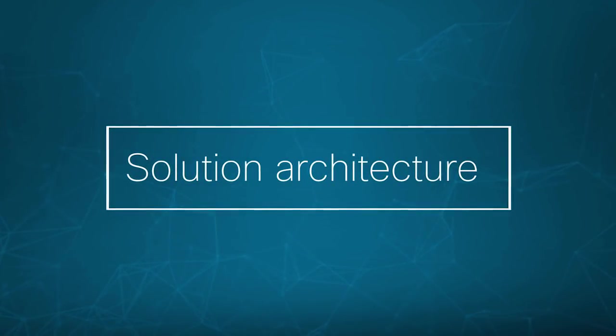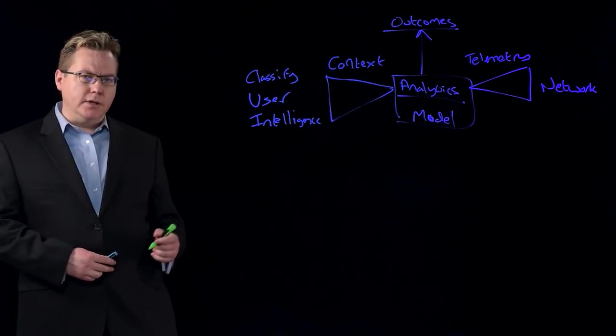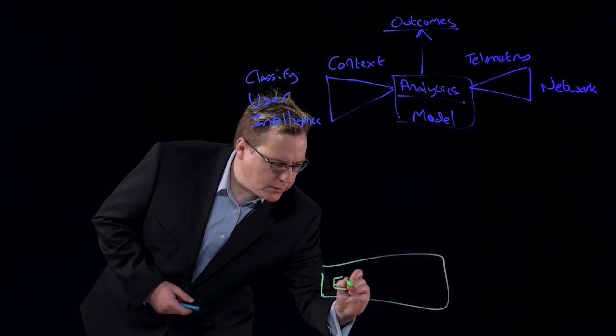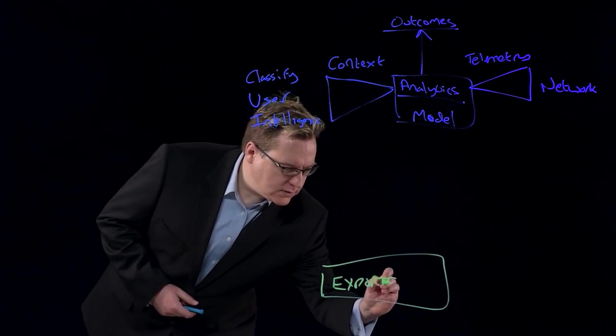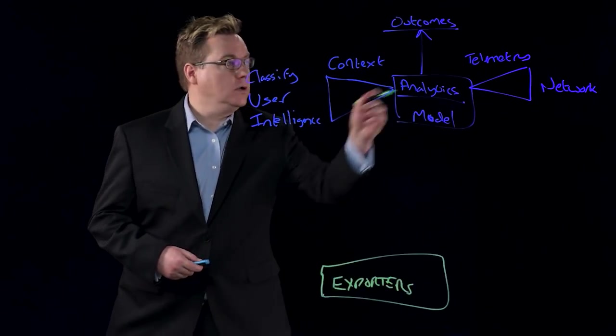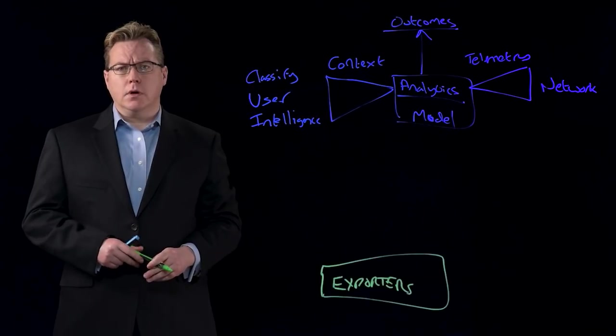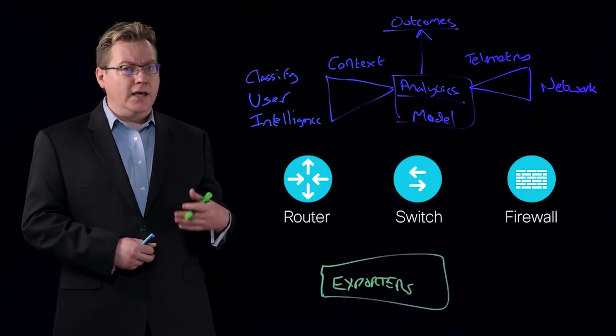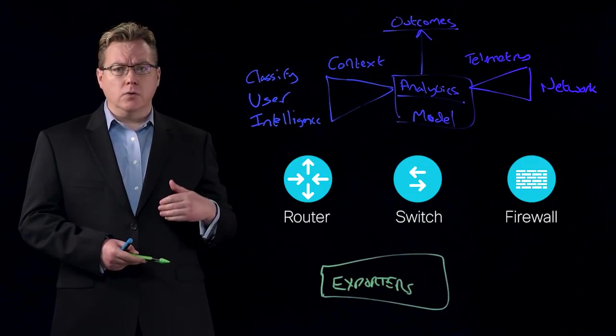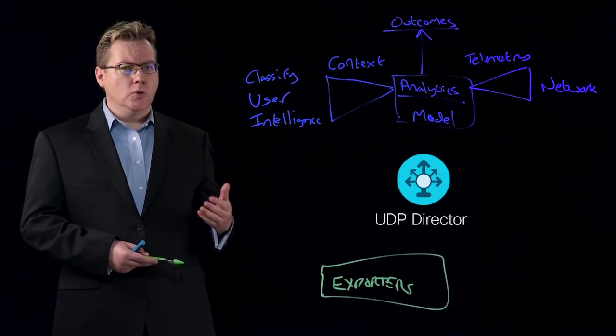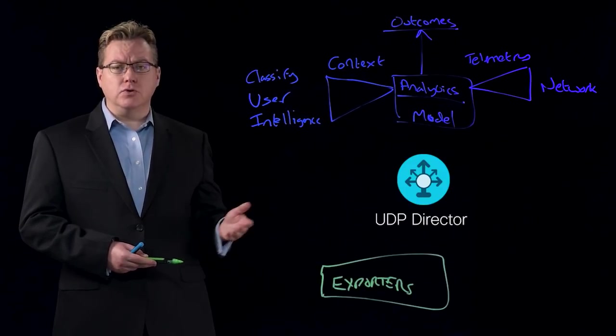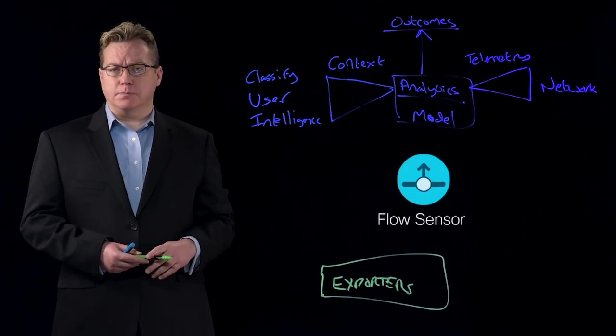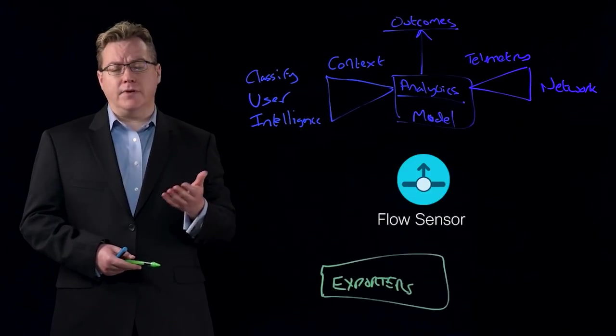So let's talk about the architecture of Stealthwatch Enterprise. Simply, it's three main components. The first is what we call the exporters. This is our way of getting this transactional telemetry into our data model. Now this can take the form of NetFlow or IPFIX coming from the network. It can take the form of using some of our products, the UDP director, which is our way of forwarding on UDP streams or replicating them. It can take the form of the flow sensor, which is our device to be attached to a span port for those that can't speak native IPFIX or NetFlow.